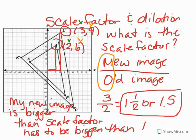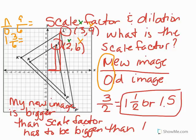For that example I used the x values. This time I'm going to use the y values, so you can see it doesn't matter if you choose x or y — you just need to be consistent, whichever one you choose. So again, to find the scale factor, it is new over old. My new y is 9 over my old y, which is 6. When I put it in its lowest form, it's 1 and 3/6, and 3/6 is 1 half — so 1.5. As you can tell, it doesn't matter which one we choose; we just need to be consistent.